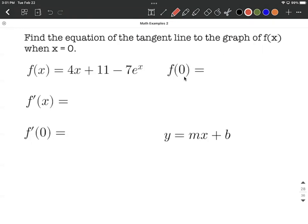And then we need the slope of our line. We're going to get the slope by taking the derivative of the original function and then evaluating the derivative at zero. So first, let's find the point by plugging zero into the original function.